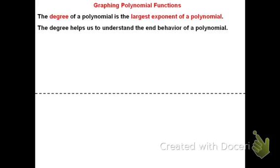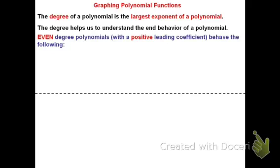It's helpful to understand how the end behavior of the polynomial will work. If you have an even degree polynomial with a positive leading coefficient — that is, if the number in front of the term with the largest exponent is positive and it's an even exponent — then as x goes to negative infinity, f will go up towards infinity, and as x goes to positive infinity, f will still go towards positive infinity, meaning the end pieces will look like this.